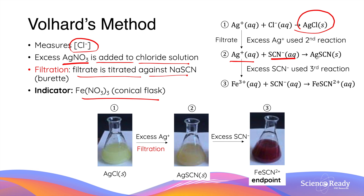When all excess silver ions have precipitated in this reaction, the excess thiocyanate ions will then react with the iron(III) ions that were present in the conical flask. This will form a metal complex with a distinct blood-red colour — iron thiocyanate. This is shown in the third picture. The formation of this red complex marks the endpoint of Vohar's method.